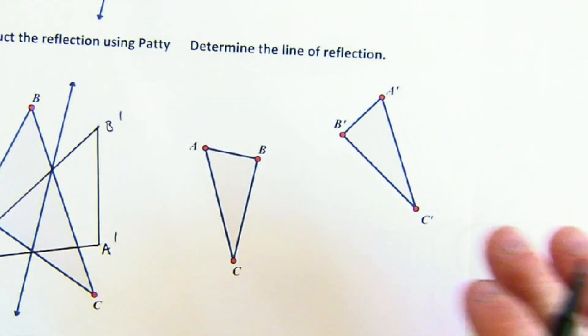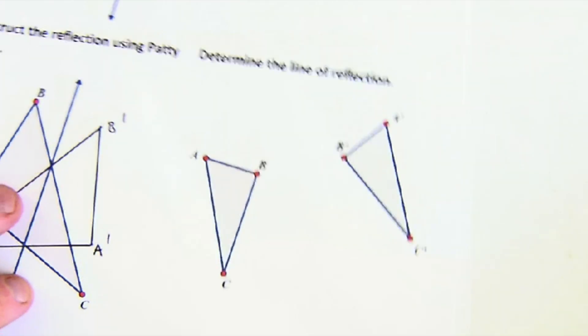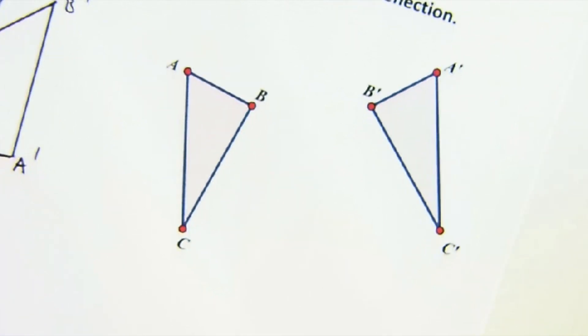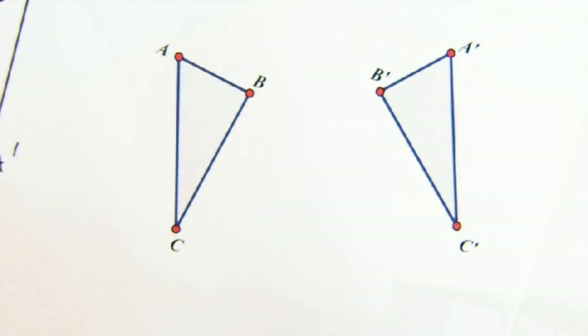The last question says, determine the line of reflection. Oh, cool. So, in other words, the line is missing, but the reflection has taken place. Now, we know the line is going to go right down the middle here somewhere.